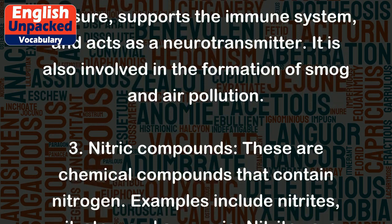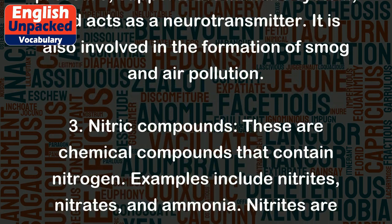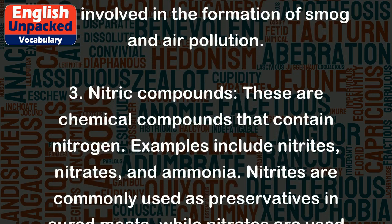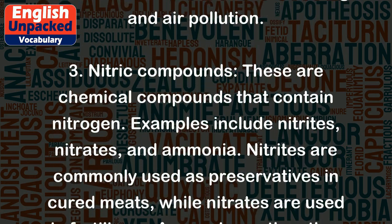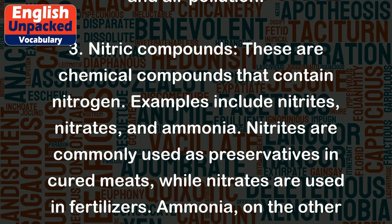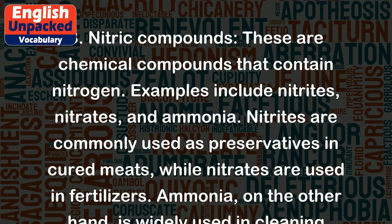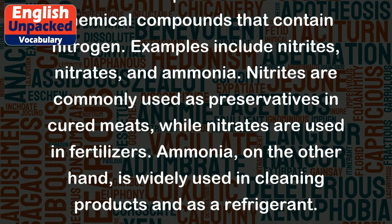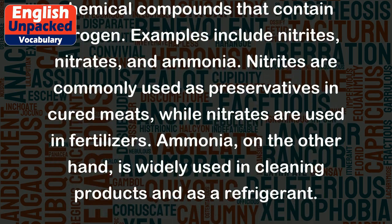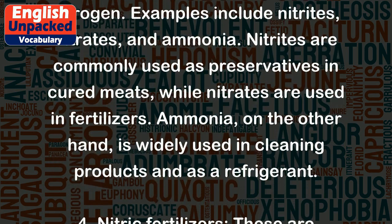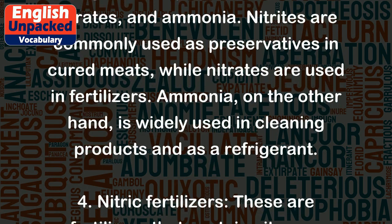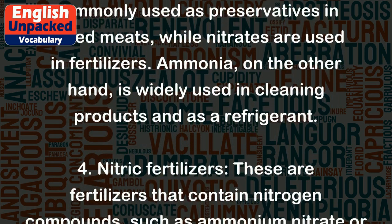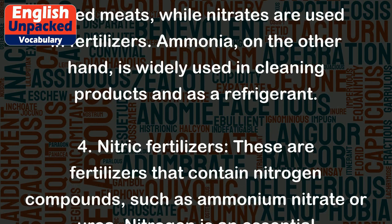3. Nitric compounds. These are chemical compounds that contain nitrogen. Examples include nitrites, nitrates, and ammonia. Nitrites are commonly used as preservatives in cured meats, while nitrates are used in fertilizers. Ammonia, on the other hand, is widely used in cleaning products and as a refrigerant.